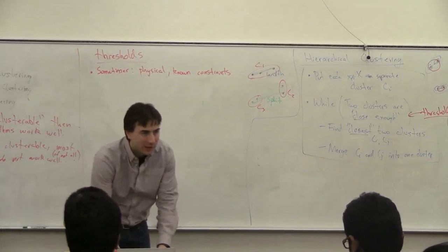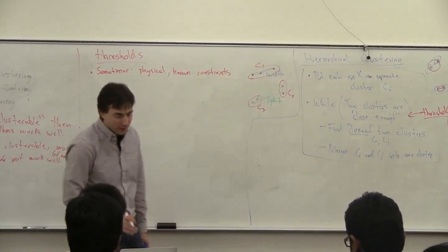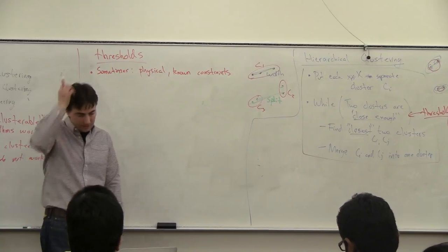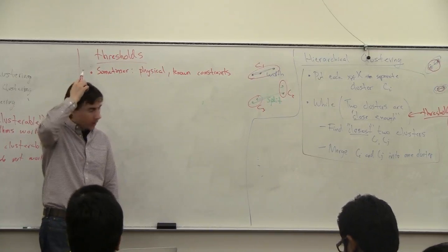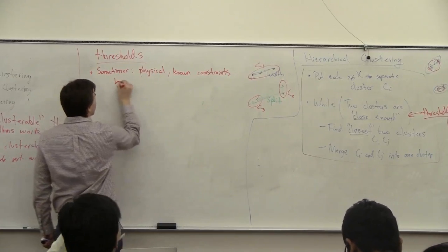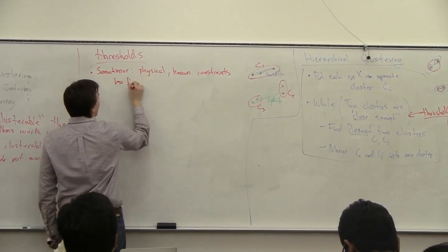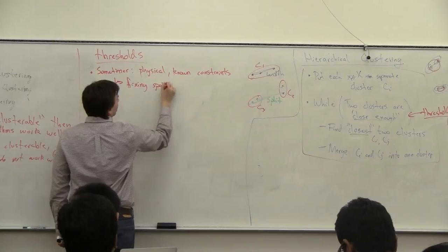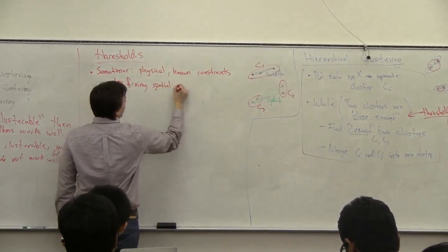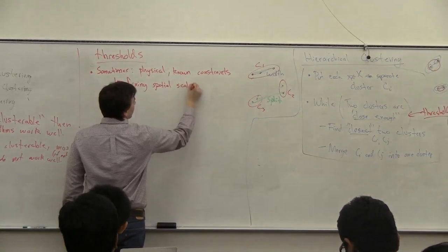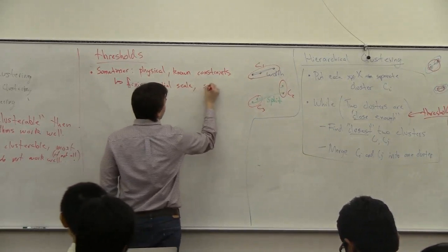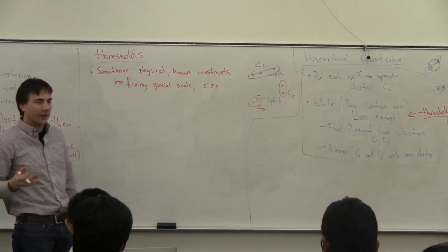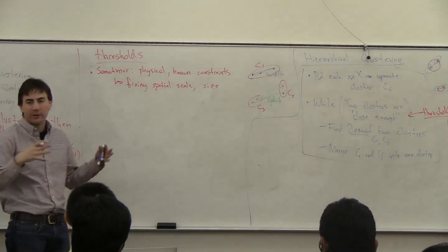In some cases you don't need to use any sort of magical technique. This could be something like fixing a spatial scale, some sort of size, or some sort of capacity — for example, only so much mail can fit in a mail truck.